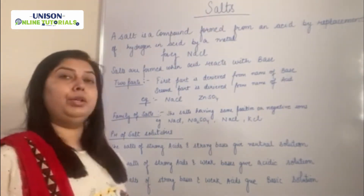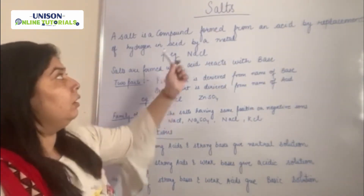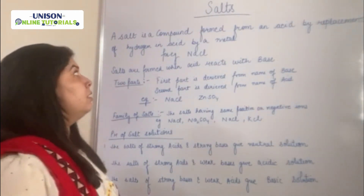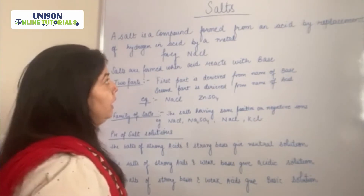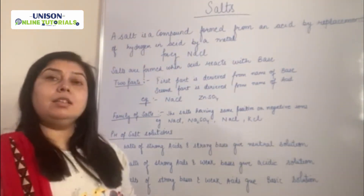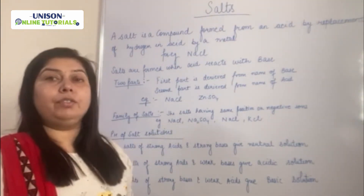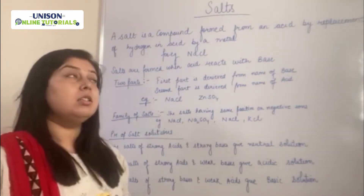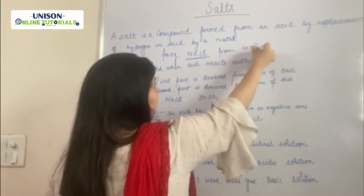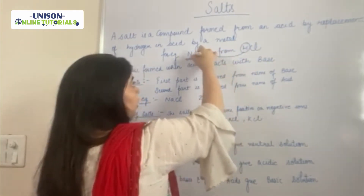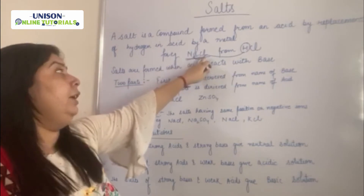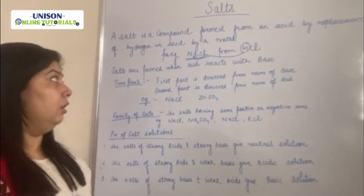Today we are going to do the next category of compounds known as salts. We have already done acids and bases. Salt is a compound formed from an acid by replacement of hydrogen by a metal. If you replace the H+ ion of an acid by a metal, you get a salt. For example, NaCl is formed from HCl when H+ is replaced by sodium.